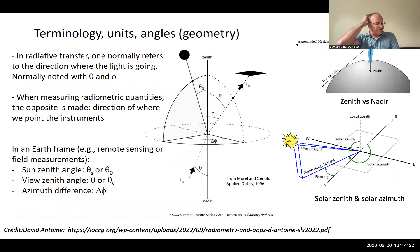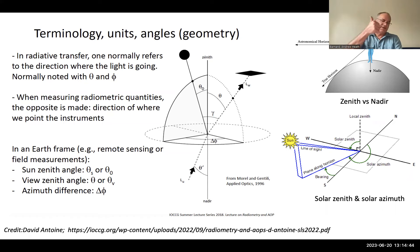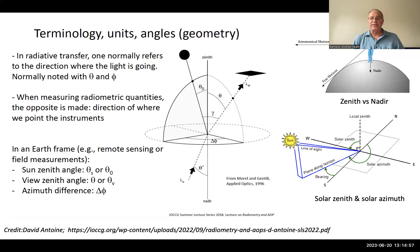Let's talk about angles. The symbol theta is the zenith angle — the angle from basically the up-and-down direction — as opposed to the azimuth angle phi, which goes 360 degrees around the sphere in a planar sense. Those are the two key angles to remember, and you'll see them used throughout the terminology in radiative transfer and radiometry.